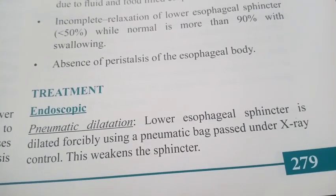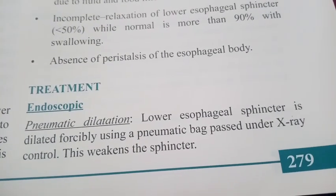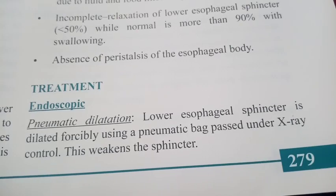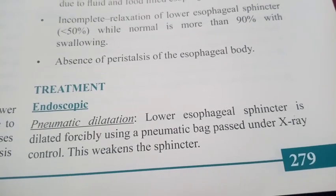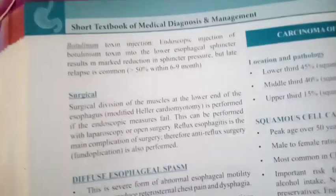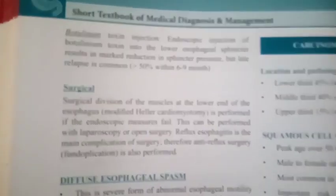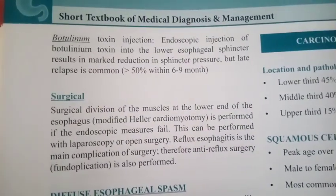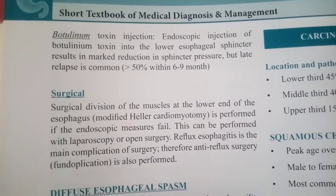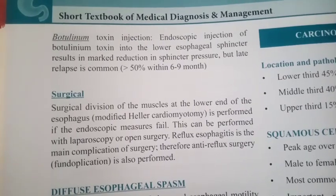Treatment: pneumatic dilation — the lower esophageal sphincter is dilated forcibly using a pneumatic bag passed under X-ray control; this weakens the sphincter. Botulinum toxin injection: endoscopic injection of botulinum toxin into the lower esophageal sphincter results in a marked reduction in sphincter pressure.